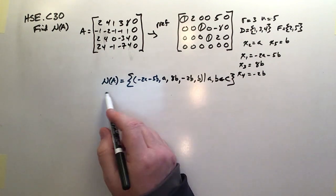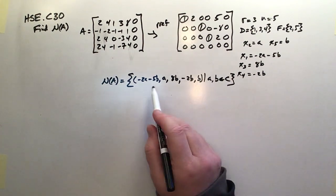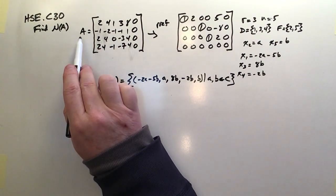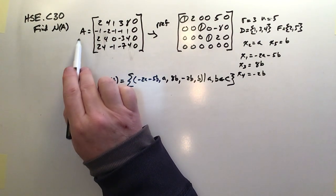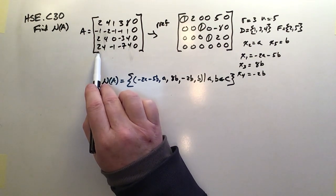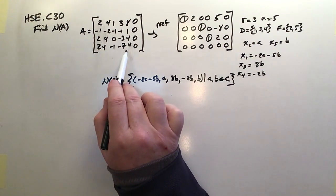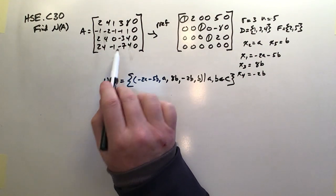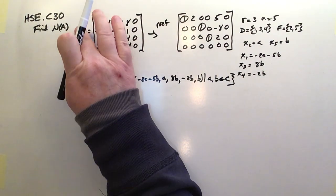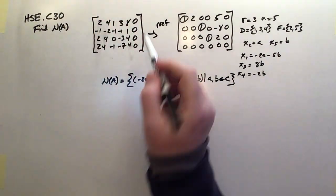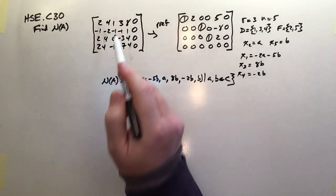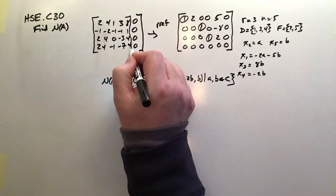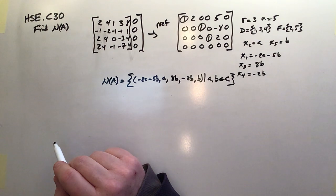And there it is. So that's the null space that is the solution set for our original matrix A, assuming that it was the coefficient matrix for a homogeneous system. And again, strictly speaking now, this is no longer matrix A because I've added in that last column there. So A doesn't exist anymore. A is just this portion right here. That's A. There we go.